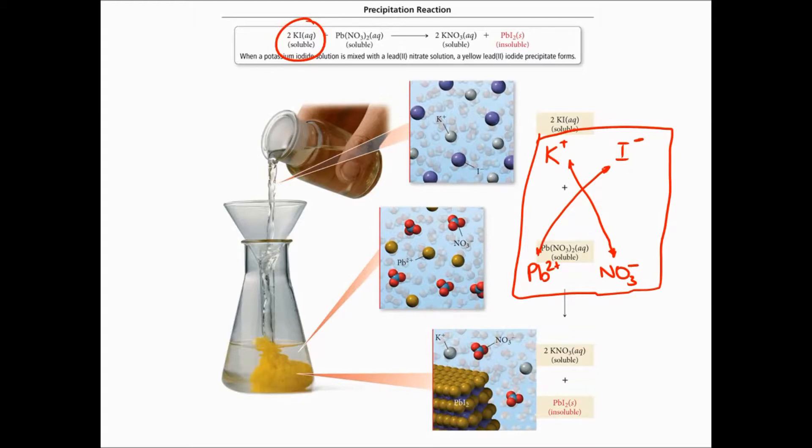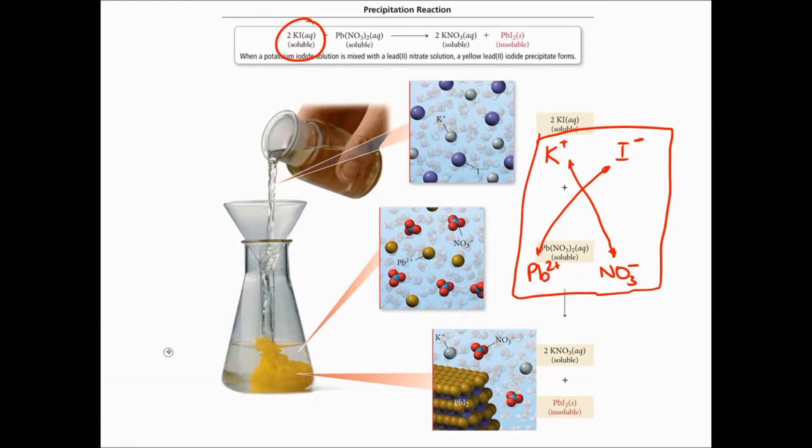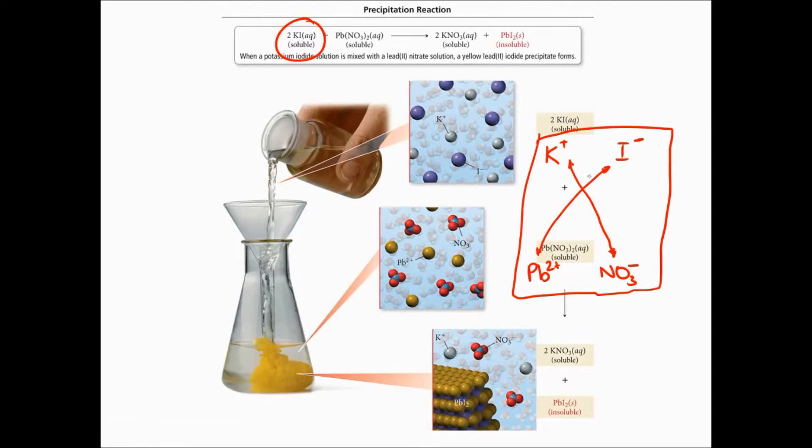And this is why we call it double replacement because what happens is you swap the two pairs of cations and anions around. So you think about what happens when potassium is with the nitrate and what happens with lead 2 is with the iodide. I know I'm not very good at drawing, this is a lot clearer.